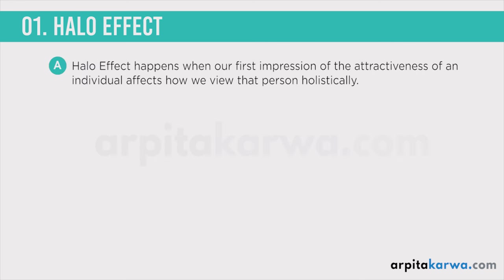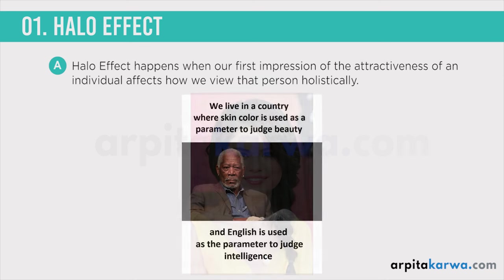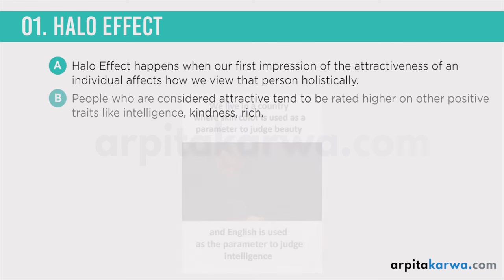This is exactly what is known as halo effect. Halo effect happens when our first impression of somebody's attractiveness affects how we view that person holistically. Physical appearance is the key in halo effect. People who are considered attractive or beautiful tend to be rated higher on positive traits like intelligence. There is a common joke in India which says beauty or skin color determines your intelligence level — when we see a beautiful person for the first time, we automatically assume they might be intelligent, from a good family, rich, and kind-hearted. All these traits are associated with the single physical trait of attractiveness.